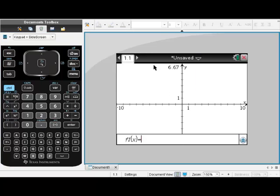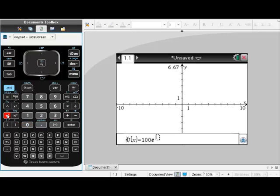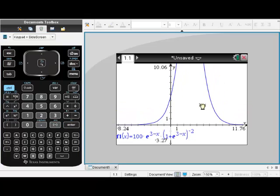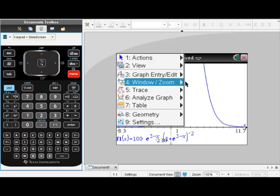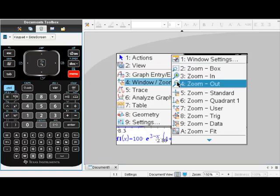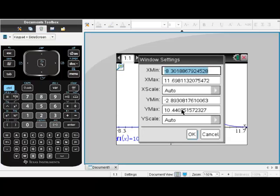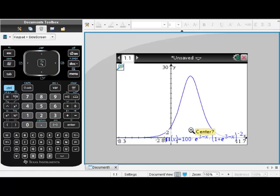So on your Inspire, we're going to choose to add a graph. And for f(x), we're going to go with 100 e to the 3 minus x power, and then parentheses, 1 plus e to the 3 minus x, and then close your parentheses, and all of that to the negative 2. So here's your graph. And wow, it goes way up there. So let's change that window. And let's see. What if we go out to 30? Perfect.